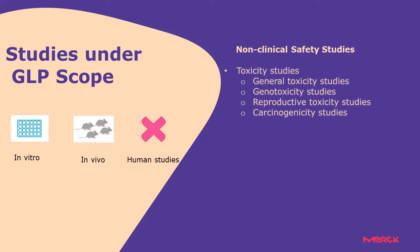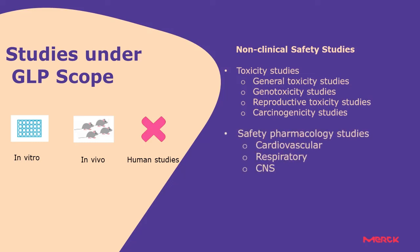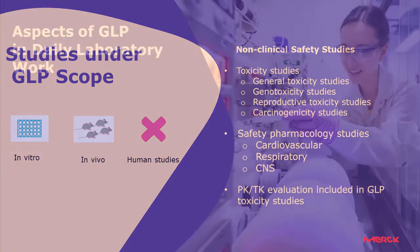Toxicity studies are as follows: general toxicity studies, genotoxicity studies, reproductive toxicity studies, and carcinogenicity studies. Safety pharmacology studies include: cardiovascular, respiratory, and CNS. Additionally, pharmacokinetics and toxicokinetics evaluations are included in GLP toxicity studies.